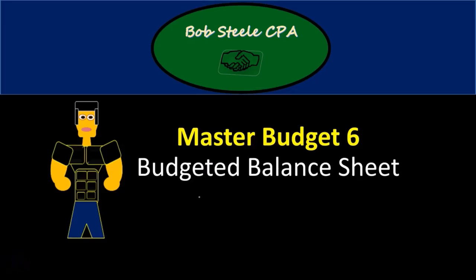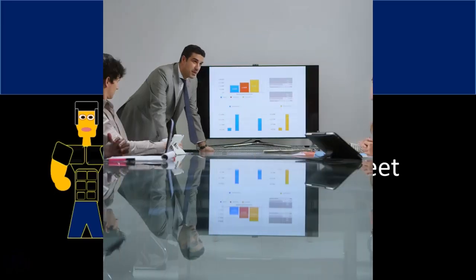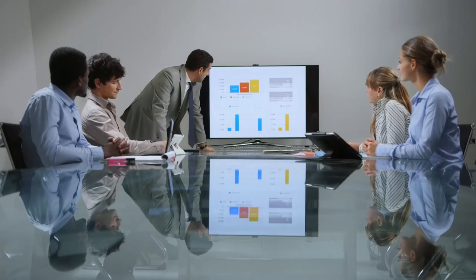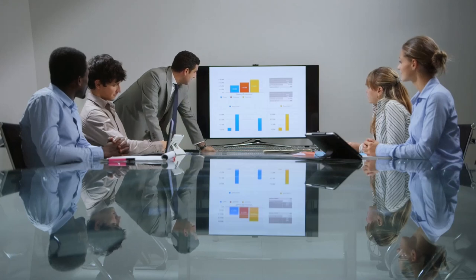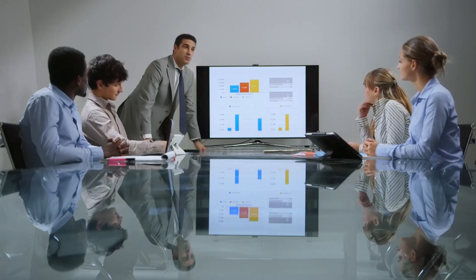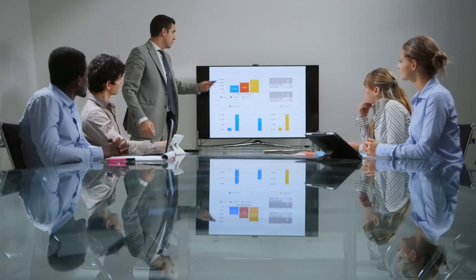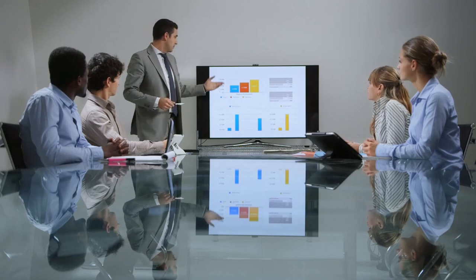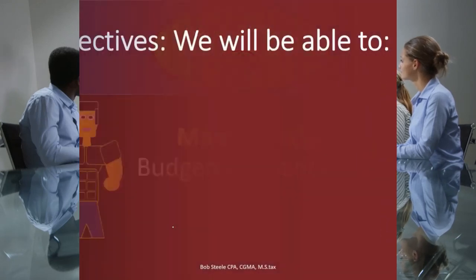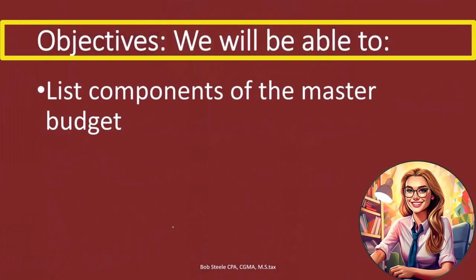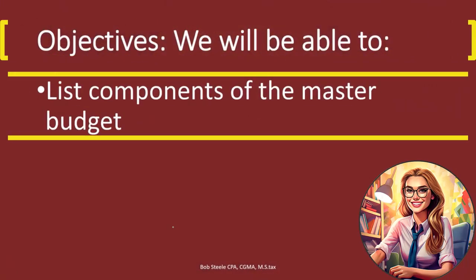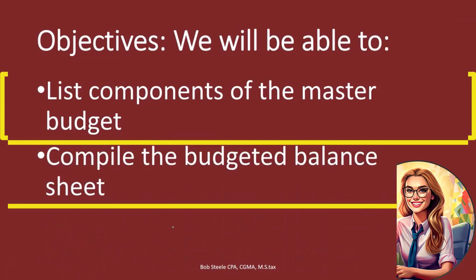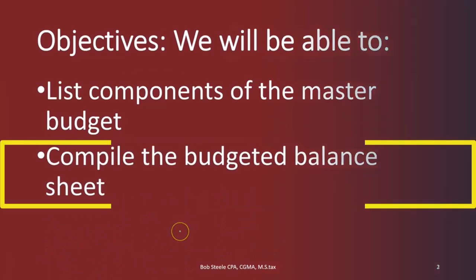In this lecture we're going to look at the Master Budget Part 6, Budgeted Balance Sheet. If you haven't taken a look at the other five, you might want to take a look at those first because we will be using components of those in order to compile the balance sheet. At the end of this, we will be able to list components of the master budget and compile the budgeted balance sheet.